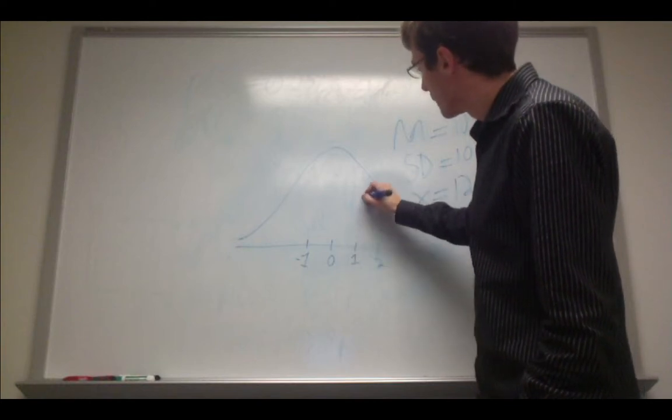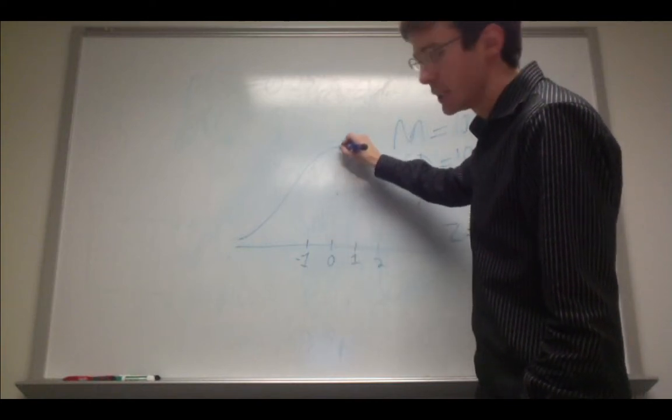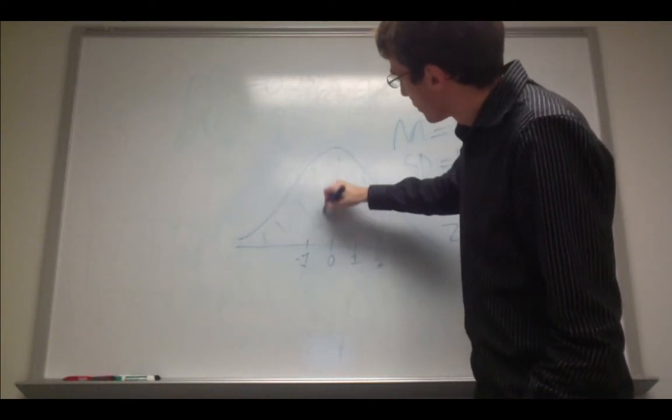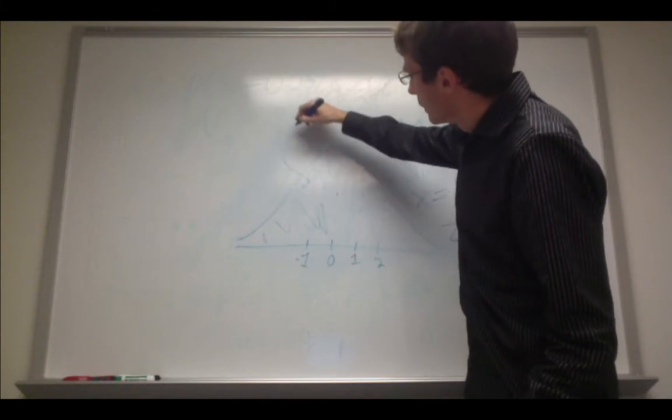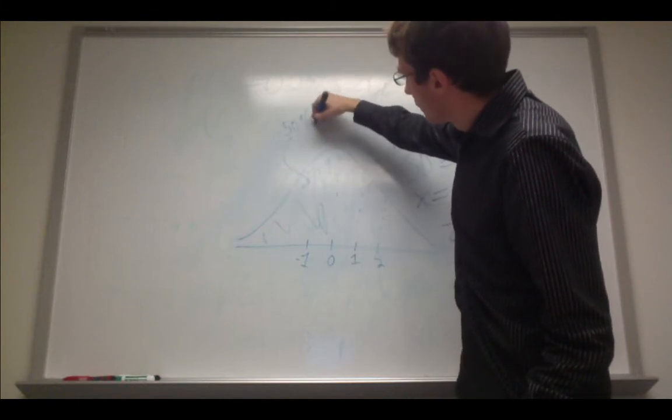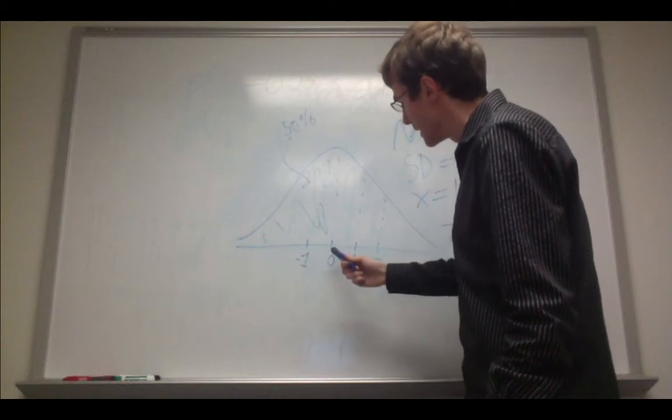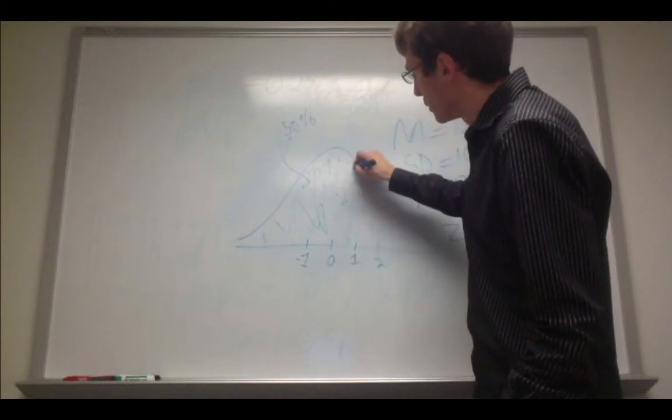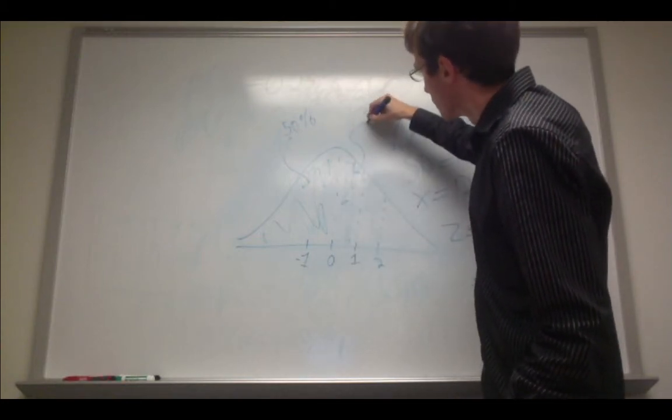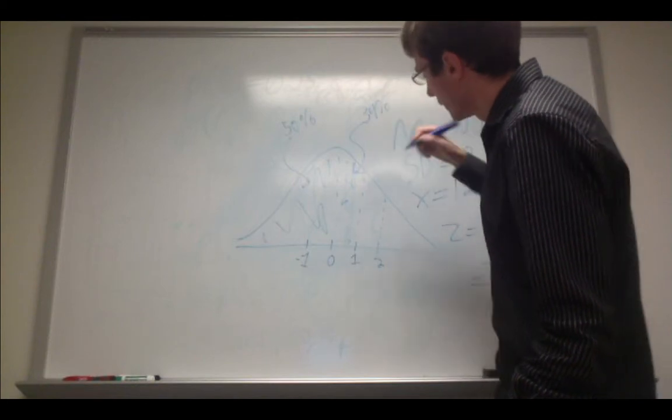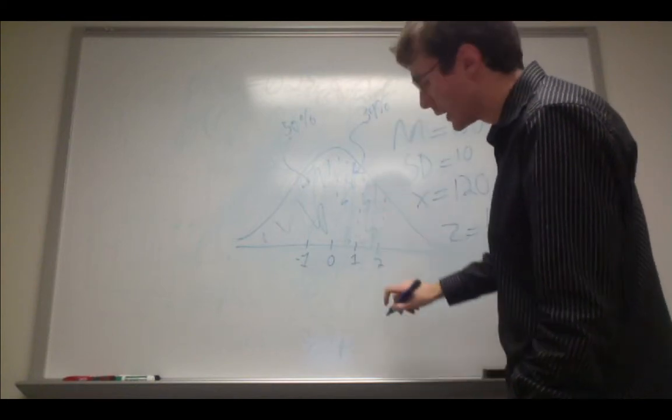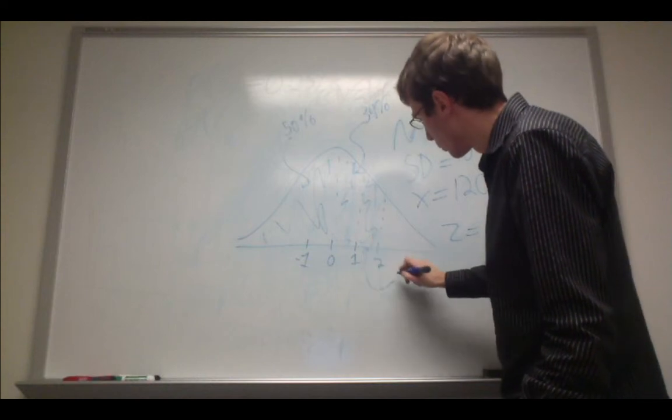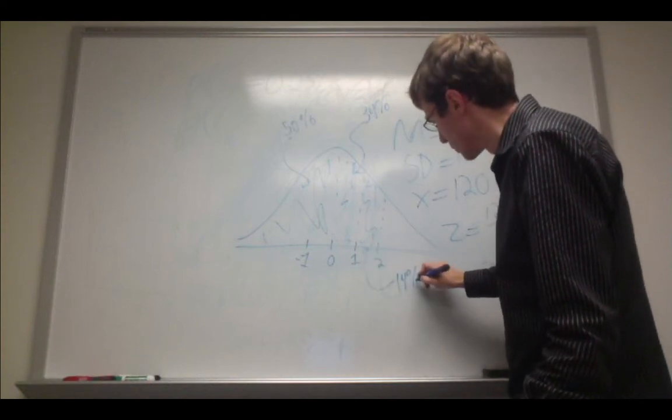And recall from the 50-34-14 rule that this part of the distribution is going to be 50%, and from the mean to a z-score of 1 is going to be 34% of the distribution. And lastly, between a z-score of 1 and a z-score of 2 is going to be 14% of the distribution.